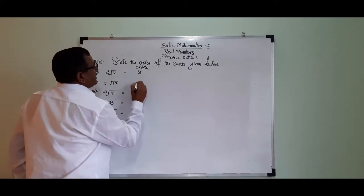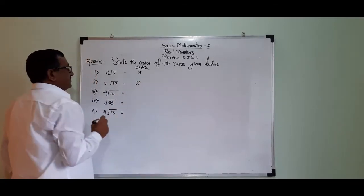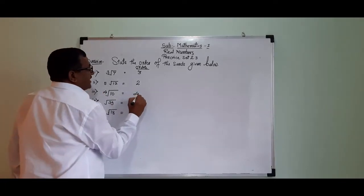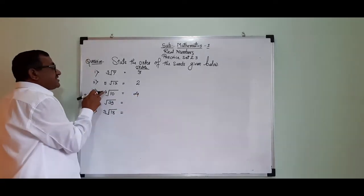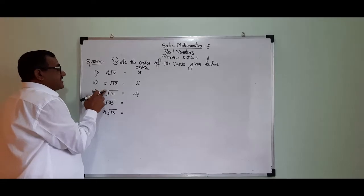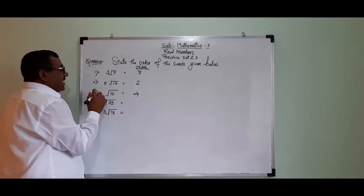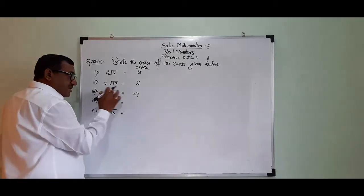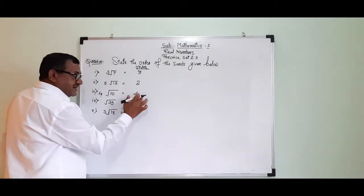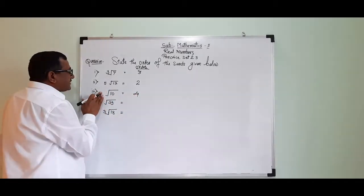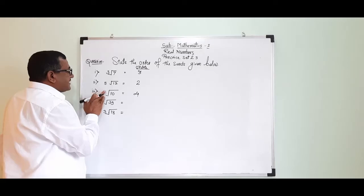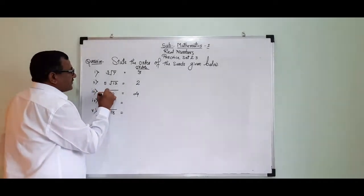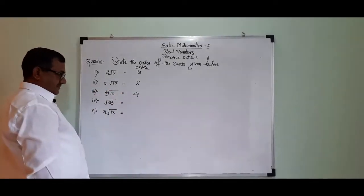I can say the order is two. It is four. If these are four, there are two. We can answer two. I can say four.